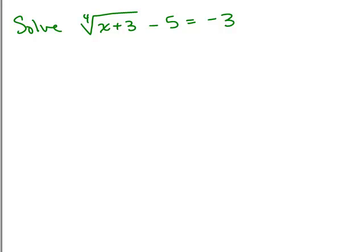Here's a problem with the fourth root. Again, we want to begin by isolating the radical, which is the fourth root, so we want to add 5 to both sides. So we've got the fourth root of x plus 3 is equal to 2.